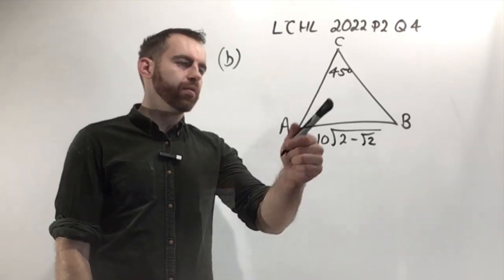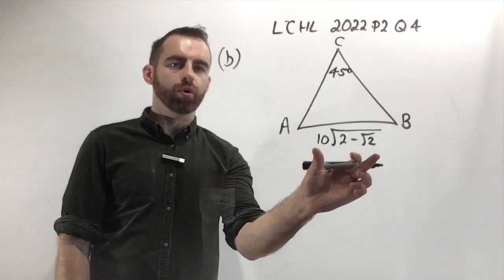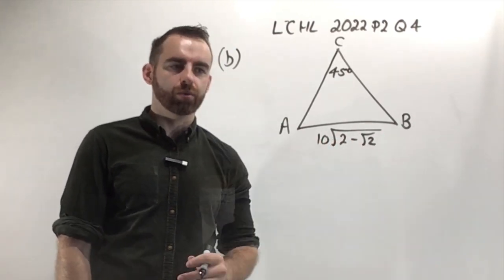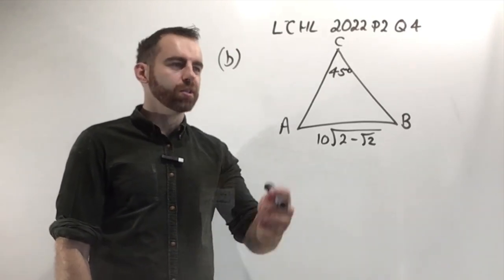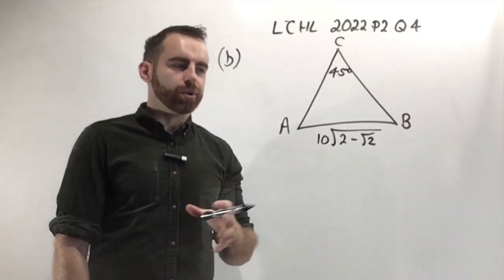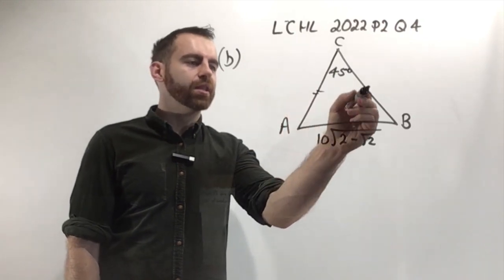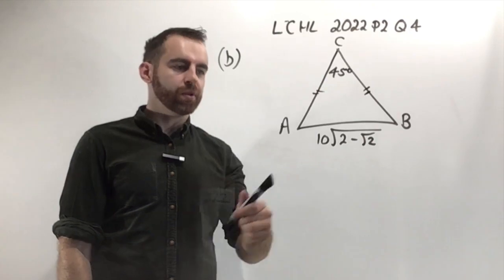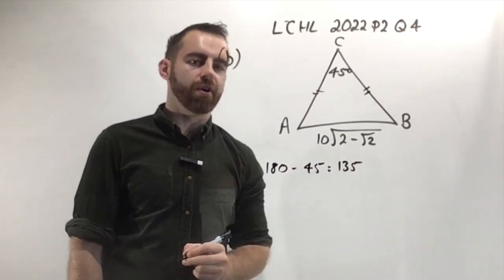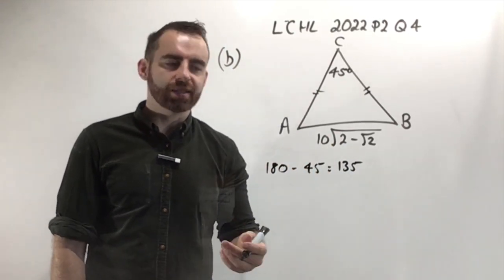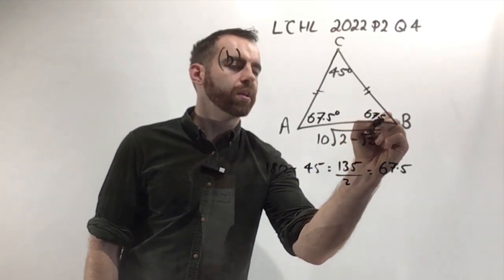In part B, we're given a triangle. The angle at C is 45 degrees. We've been told the distance from A to C equals the distance from B to C. We know one side is 10 root 2 minus root 2. We're asked to find the distance AC. The easiest way is to use the sine rule. First, they've told me AC equals BC—it's an isosceles triangle. So the two base angles must be equal. 180 minus 45 gives 135. These two angles add up to 135, so divide by 2. Each base angle is 67.5 degrees.